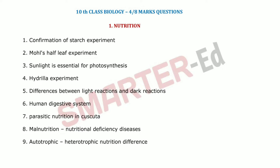The sixth question covers the human digestive system — specifically what digestive enzymes are present. The seventh question is parasitic nutrition in Cuscuta. Cuscuta is a leafless plant, meaning it has no chlorophyll, so it depends on other organisms for food. We need to write how it collects food using haustoria.